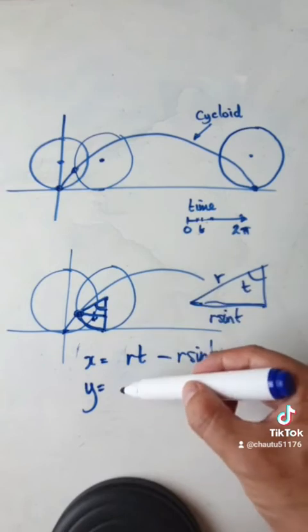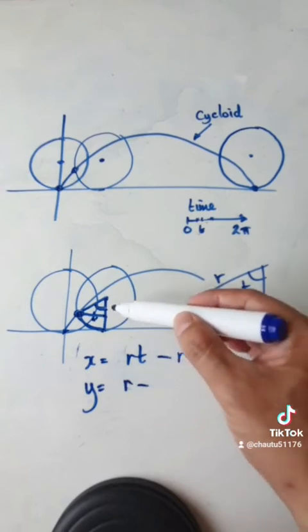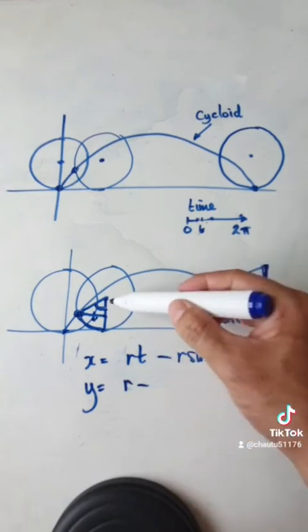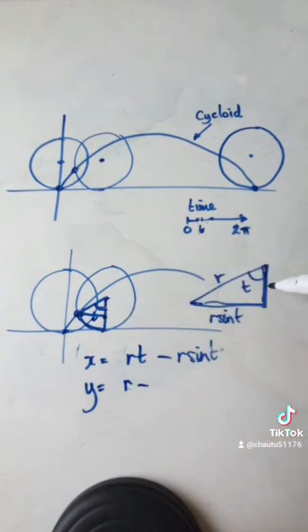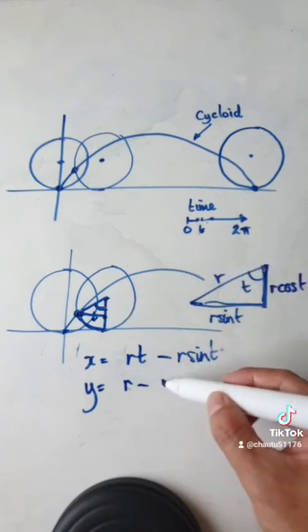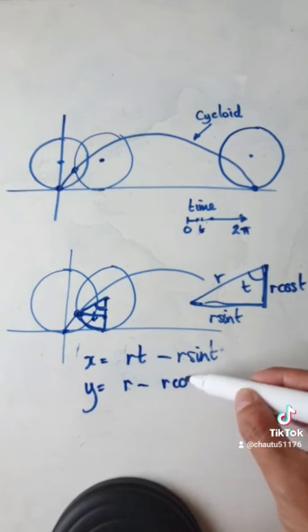It would be r, and then take away this length here, which is this length here. So this length here is r cos t.